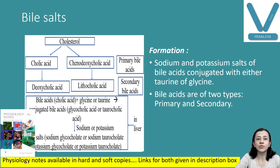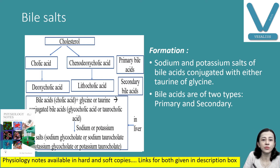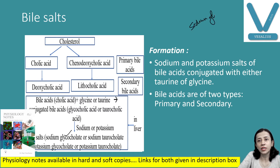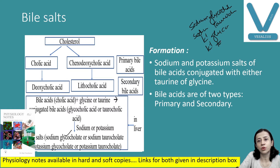What are the constituents of bile salts? Bile salts are sodium and potassium salts of glycocholate and taurocholate — that is, sodium and potassium salts of bile acids conjugated with taurine or glycine. These are: sodium glycocholate, sodium taurocholate, potassium glycocholate, and potassium taurocholate.